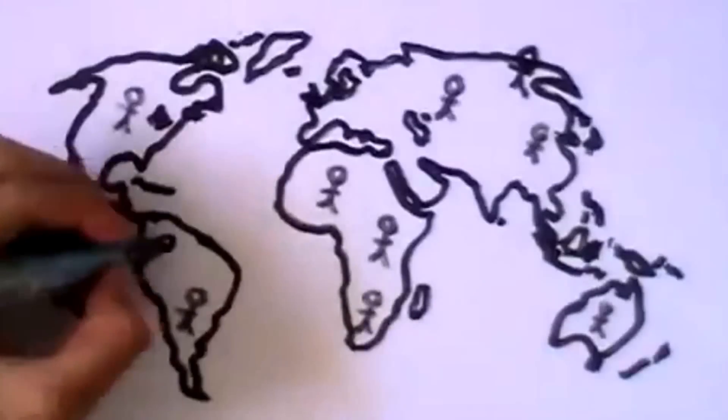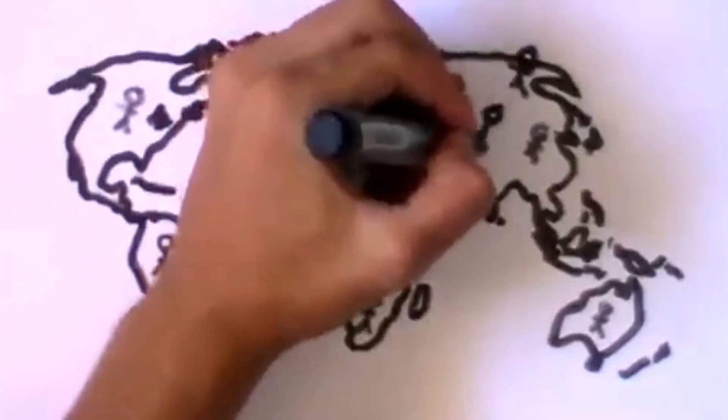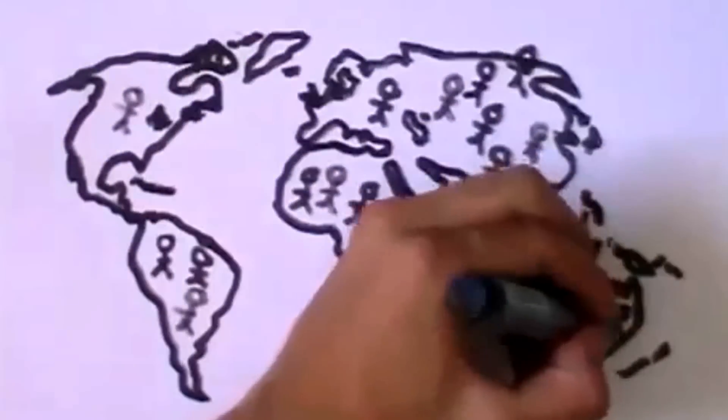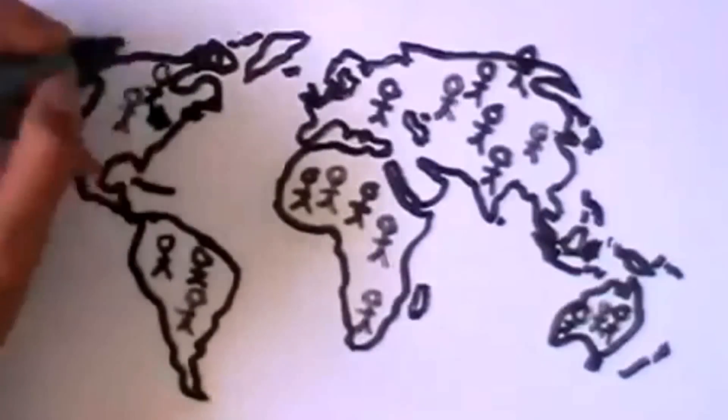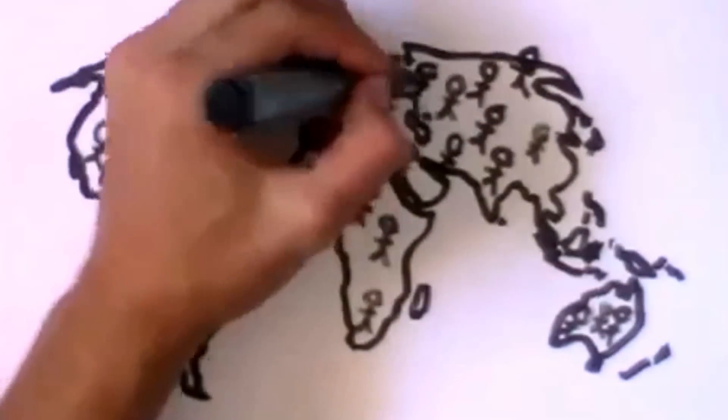Our population is growing substantially. Our world is very fragile. Our earth is struggling to support and sustain the amount of people on the planet. We are now facing this planet's sixth mass extinction.